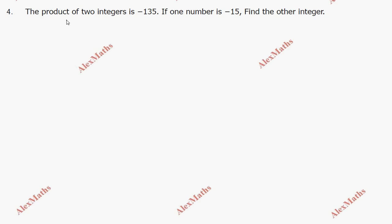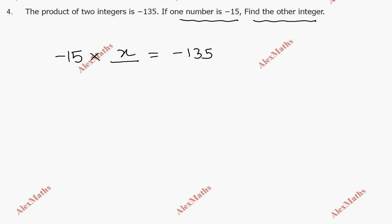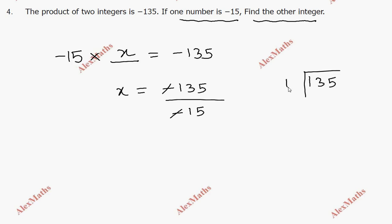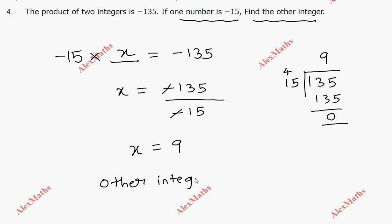Question 4: The product of 2 integers is minus 135. If one number is minus 15, find the other integer. So x equals minus 135 divided by minus 15. 135 divided by 15: 9 times 15 is 135, remainder 0. The minus signs cancel, so the other integer equals 9.